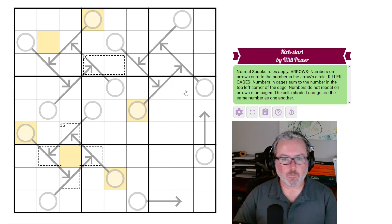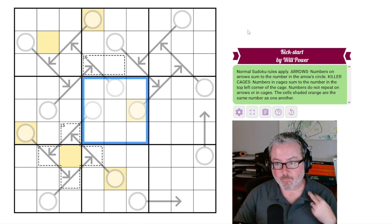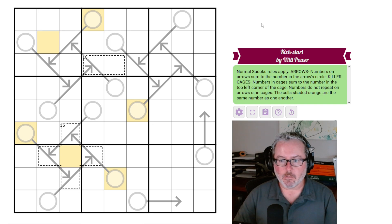So let's look at our rules. We've got normal Sudoku rules apply, so every row, every column, and every 3x3 box contains the digits 1 through 9 once each. We've got arrows, numbers on arrows sum to the number in the arrow circle. Let's just look at this one. These two digits, whatever they are, when you add them up, equal that. Plain and simple.